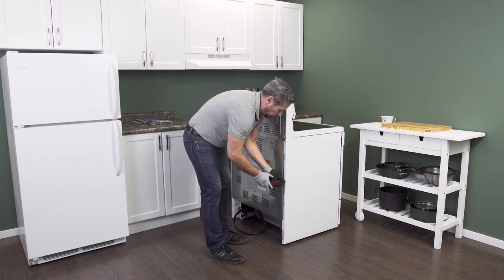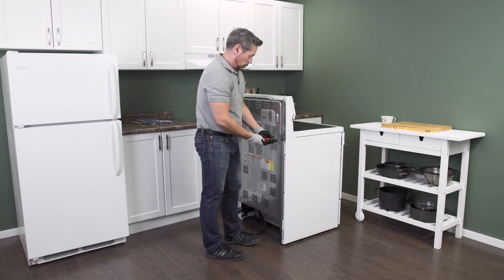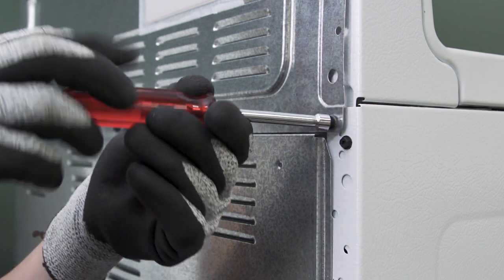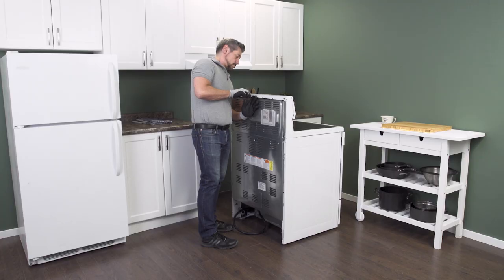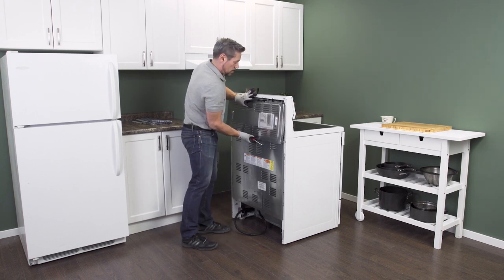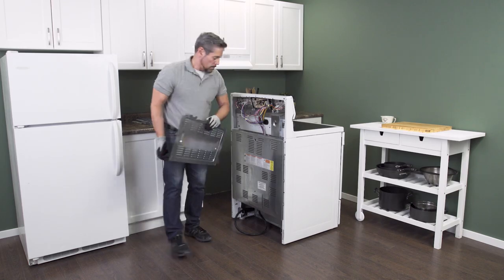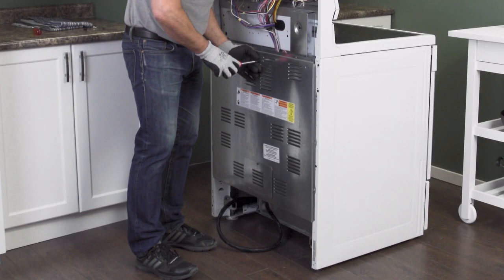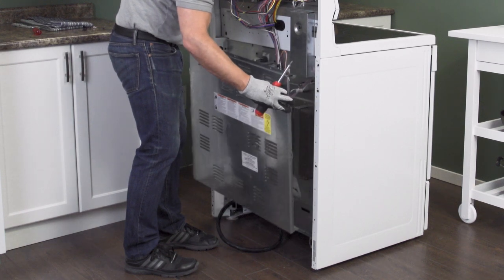On the back of the oven is a cover panel. Some models have a small panel near the top and a larger panel near the bottom. Now remove the screws. The panel will likely be sitting on several hooks. Simply lift up to remove the panel.